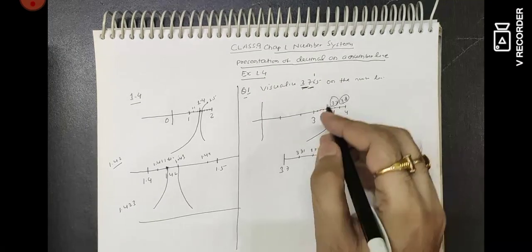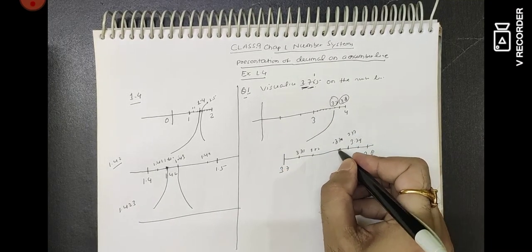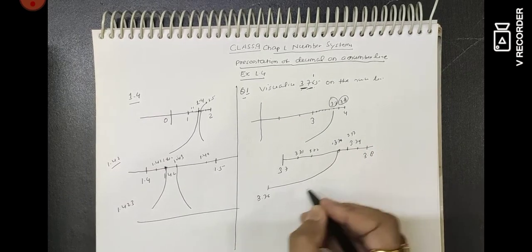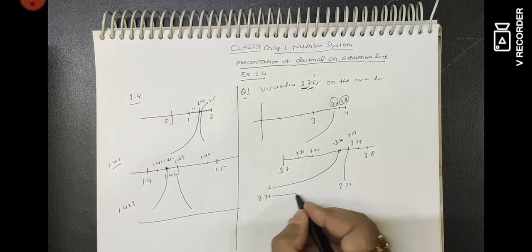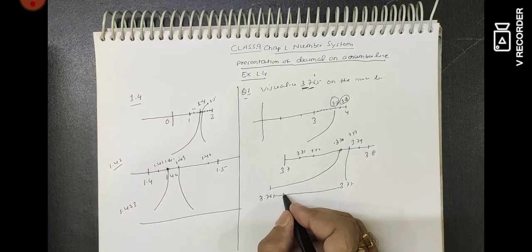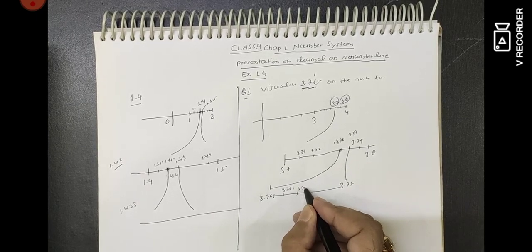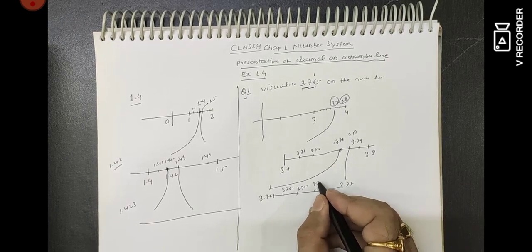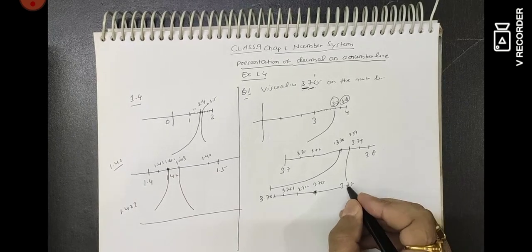Your number is 3.765, so it will be between 3.76 and 3.77. Break that segment further. This is 3.76 and this is 3.77. Divide it into 10 parts: 3.761, 3.762 … and you will find 3.765 here. Show this point — this is our desired location on the number line.